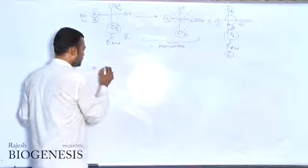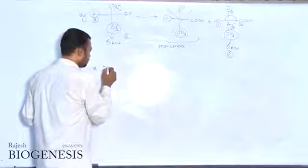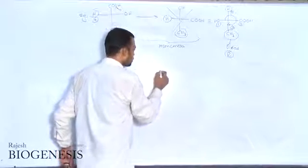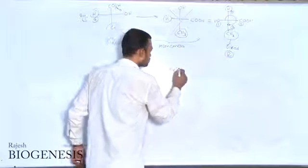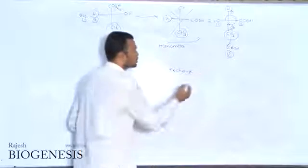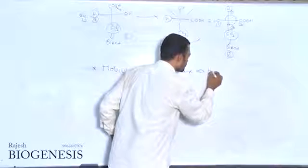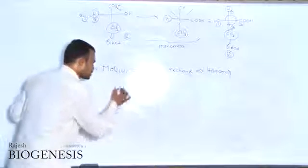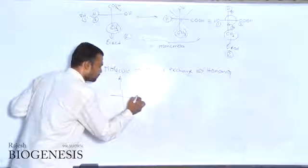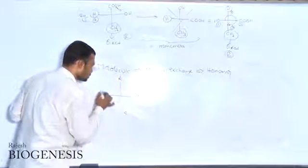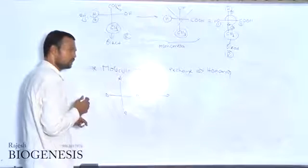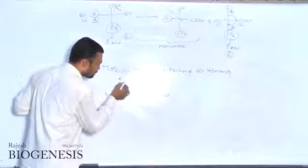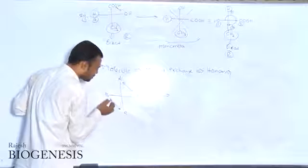One more specified point you can write now: if you take any molecule, mutual exchange in that molecule always readily produces a homomer. Mutual exchange is nothing but — if you take groups A, B, C, and D — sharing and swapping those groups produces a homomer.